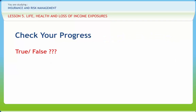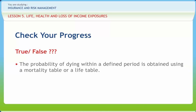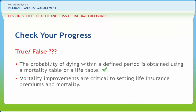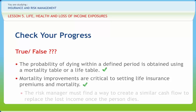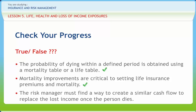Let us check our understanding of the concepts discussed. The probability of dying within a defined period is obtained using a mortality table or a life table — Right. Mortality improvements are critical to setting life insurance premiums and reserves — Right. The risk manager must find a way to create a similar cash flow to replace the lost income once the person dies — Right.